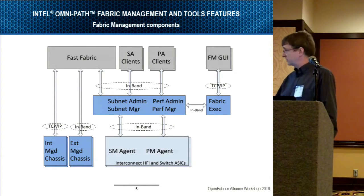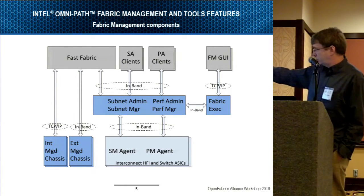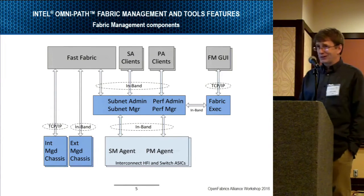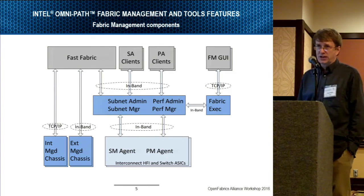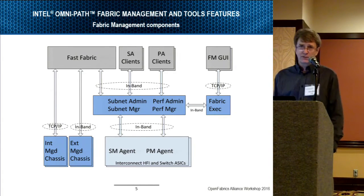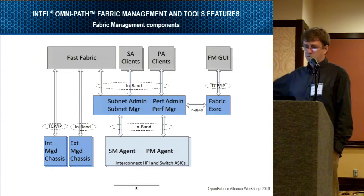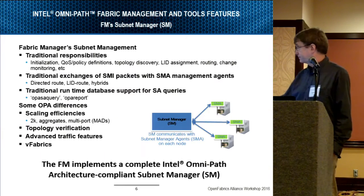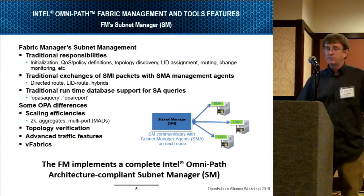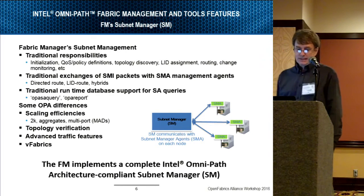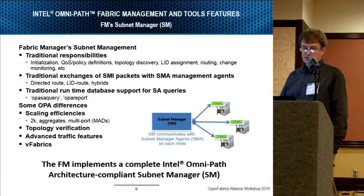The fast fabric tools — command line tools and other things — leverage both out-of-band as well as in-band techniques for dealing with what we call internally managed or externally managed chassis. The fabric manager GUI comes in through the fabric executive with the proper privileges to access the same data. Inside the fabric manager, the subnet manager works with directed route, LID-routed, and hybrid schemes for addressing packets throughout the fabric during fabric initialization and monitoring.